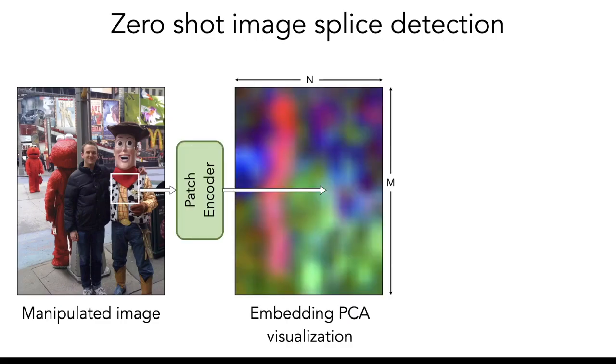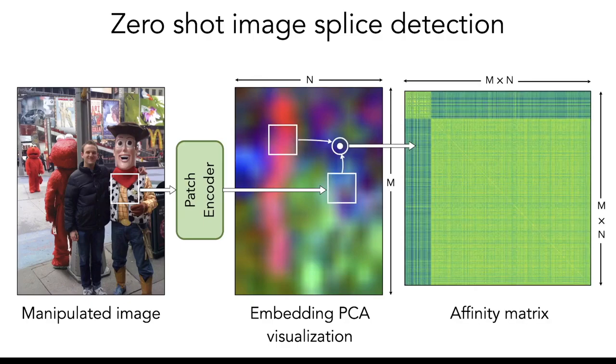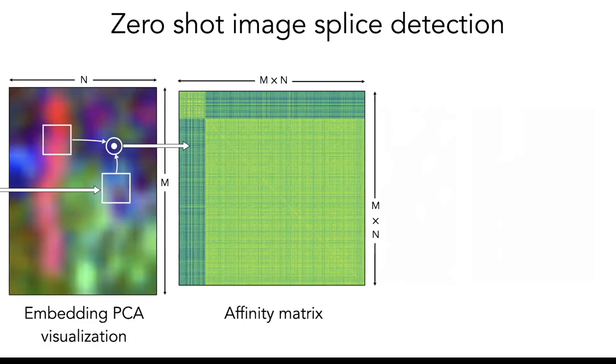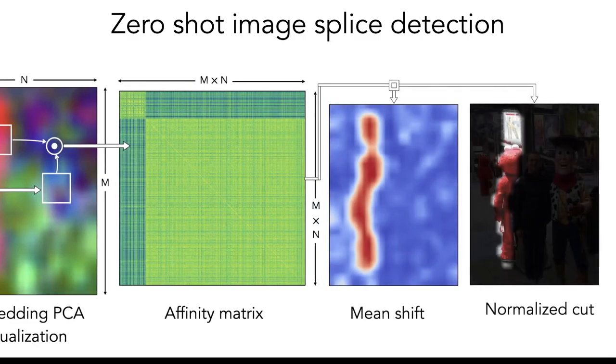We can divide the image into patches and feed it into our trained image encoder. As we can see, the output feature has already captured a lot of difference between tampered and untampered region. Then we can go one step further to take the dot product between the embeddings of different patches, resulting in this affinity matrix. And finally, we can use mean shift or normalized cut to cluster it into a per-pixel localization result.